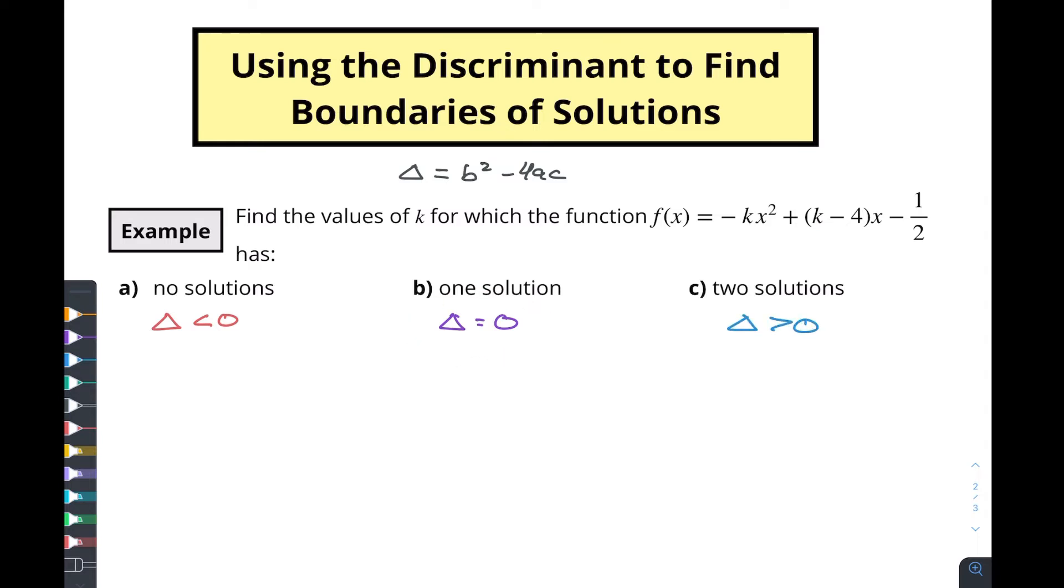So we're gonna start by looking at what is our a value, what is our b value, and what is our c value. a is negative k, b is k minus 4, and c is negative one-half.